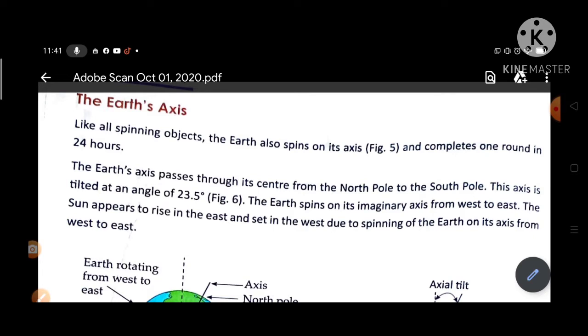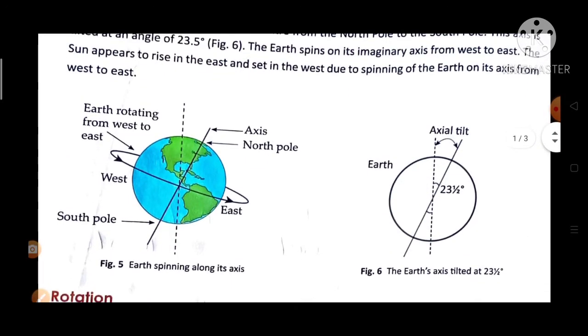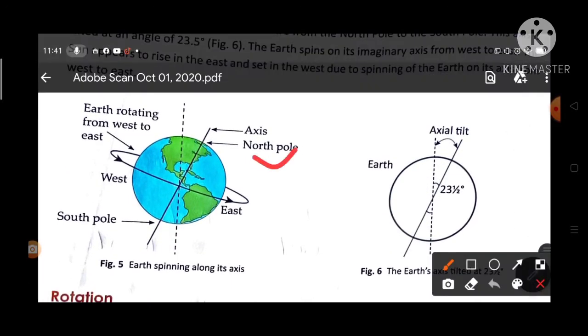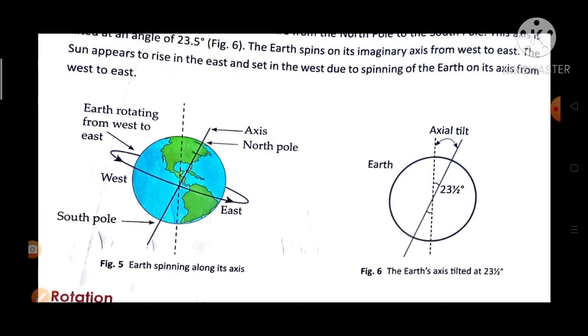As you can see in Figure 5, here is the North Pole and South Pole, West to East. The Earth spins on its imaginary axis from West to East. The Sun appears to rise in the East and set in the West due to spinning of the Earth on its axis from West to East.